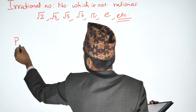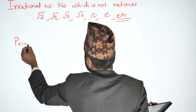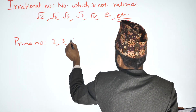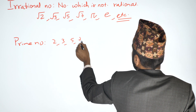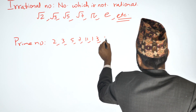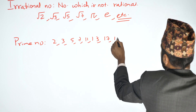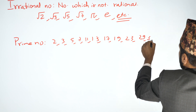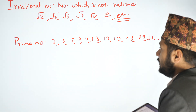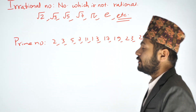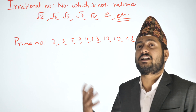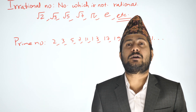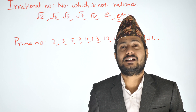Now, prime numbers. What are prime numbers? The prime numbers are: 2, 3, 5, 7, 11, 13, 17, 19, 23, 29, 31. Prime numbers are those numbers which are divisible only by 1 and themselves.